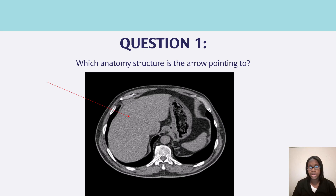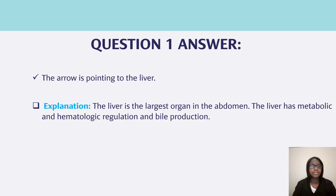For question one, which anatomy structure is the arrow pointing to? The arrow is pointing to the liver. Also make sure that you know all of the explanations, because it gives you more information to help you prepare for your registry. The liver is the largest organ in the abdomen. The liver has metabolic and hematologic regulation and bile production.